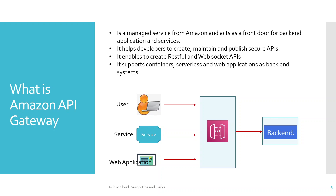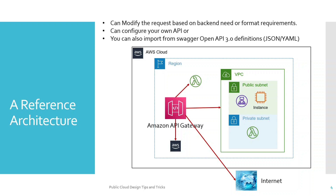In a typical scenario, there are different channels of consumers like user services and web applications that try to access APIs, which are hosted in AWS API Gateway. AWS API Gateway then integrates with the backend applications where the service is running. The reference architecture diagram represents an AWS data center within a region where API Gateway is available as a managed platform.